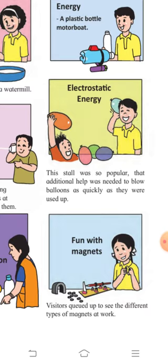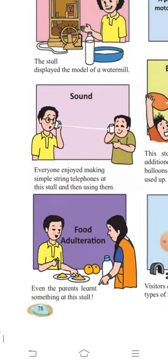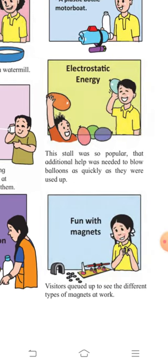When doing the electrostatics experiments, the balloons kept getting burst, so this stall was so popular that additional helpers were needed to blow up balloons. Many students came to enjoy it because the bursting balloons also made sound. Next was food adulteration — making food substances impure by adding substances of similar color or shape. Even parents learned something at this stall about how to identify whether a given food substance is pure or adulterated.